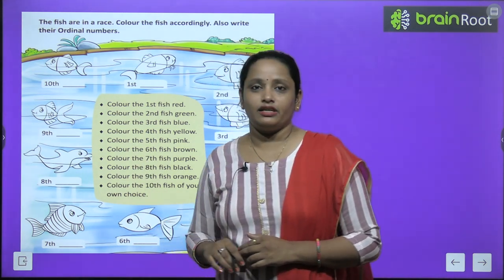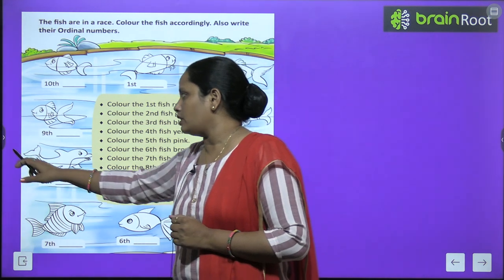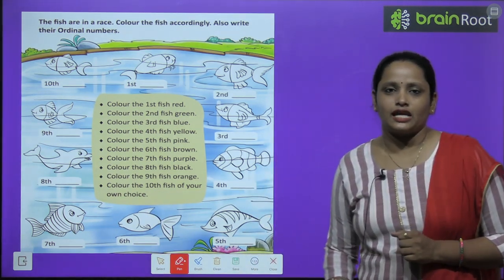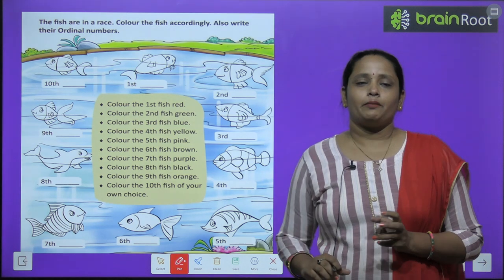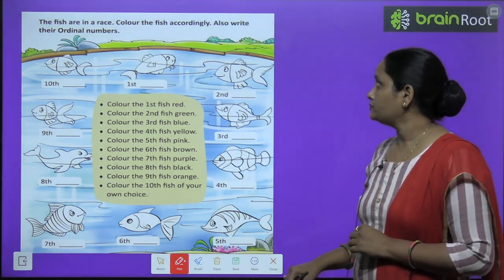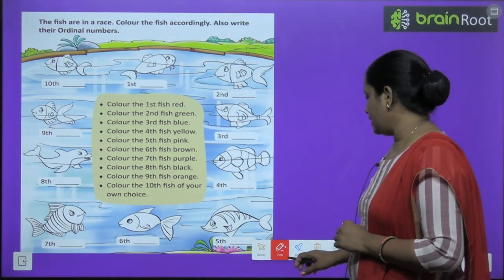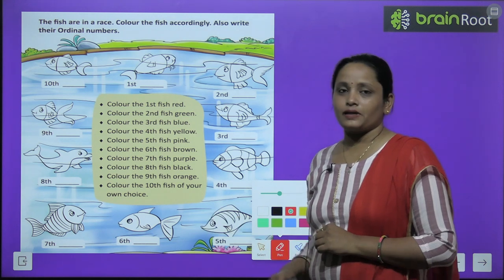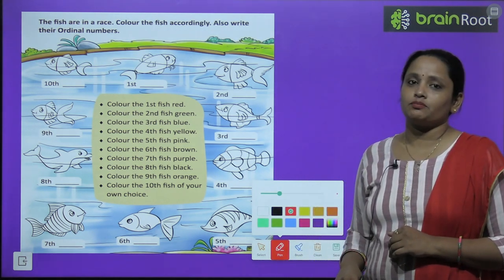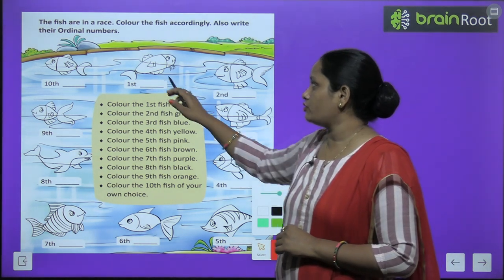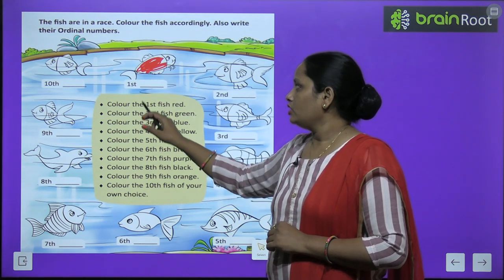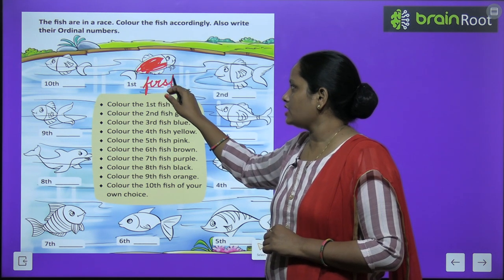The fish are in a race. These fish are racing — who will come first? You also do races sometimes in class with your friends. These fish also want to come first. We have to color the pictures and also write the ordinal numbers. Color the first fish red — which fish is at first number? Here it is. So we color this fish red and write F-I-R-S-T, first.